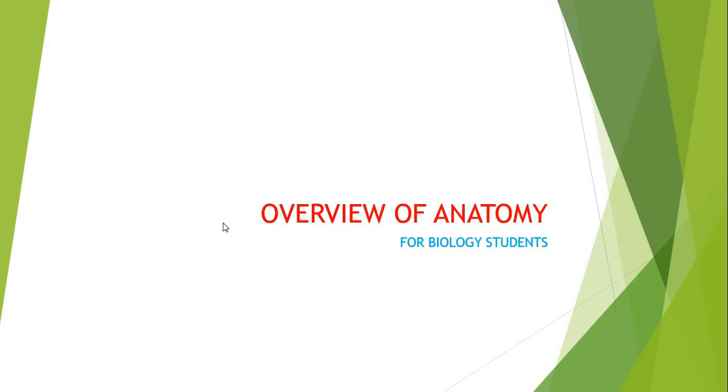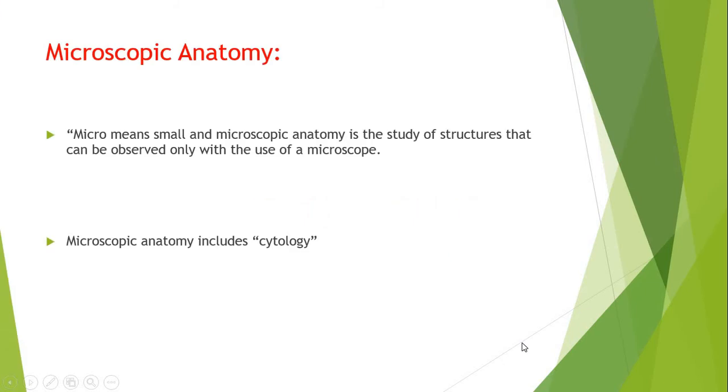This is microscopic anatomy. In my last video I already discussed about the gross anatomy and now I am discussing about the microscopic anatomy. Micro means small, the anatomy is the structure of body part by cutting it apart from the body. So when we use microscope to show any body part that is called as microscopic anatomy. In my last video we had studied about the gross anatomy which is also called as macroscopic anatomy and the body parts we can see by our naked eye.